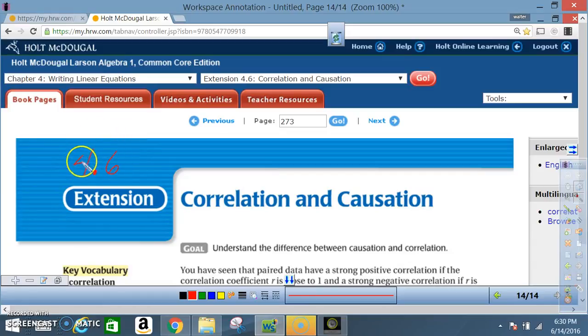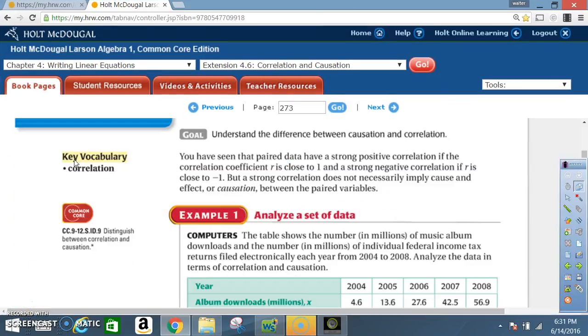Okay class, today we're in section 4.6 extension: correlation and causation. Key vocabulary: correlation. Your goal for this lesson is to understand the difference between causation and correlation.